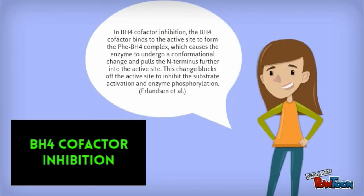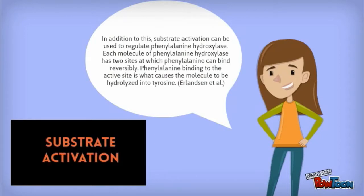In BH4 cofactor inhibition, the BH4 cofactor binds to the active site to form phenylalanine-BH4 complex, which causes the enzyme to undergo a conformational change and pulls the N-terminus further into the active site. This change blocks off the active site to inhibit the substrate activation and enzyme phosphorylation.